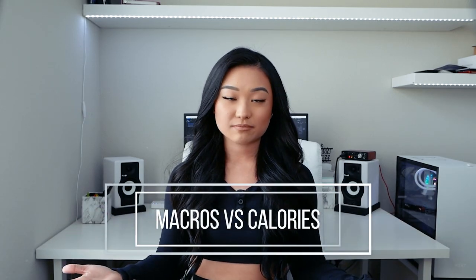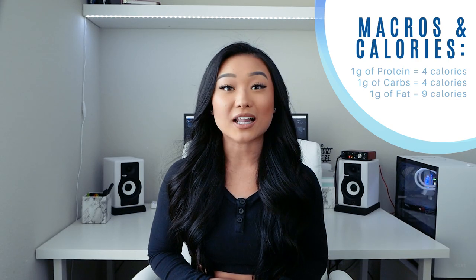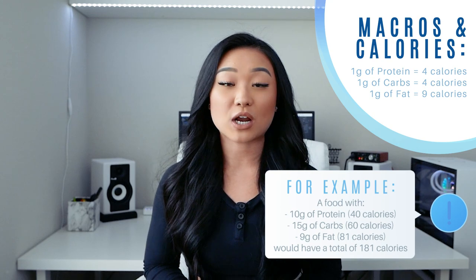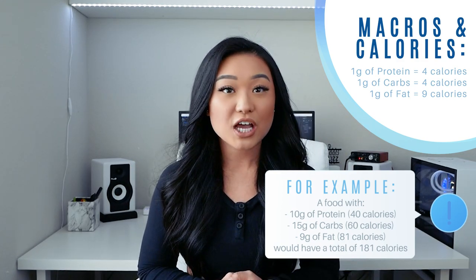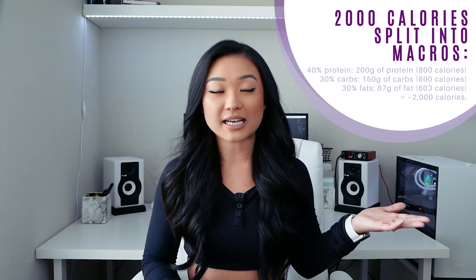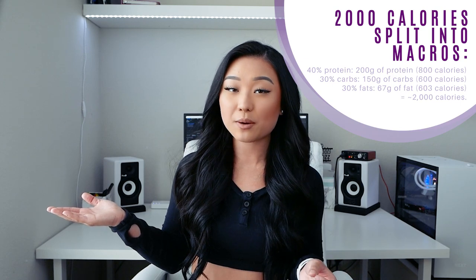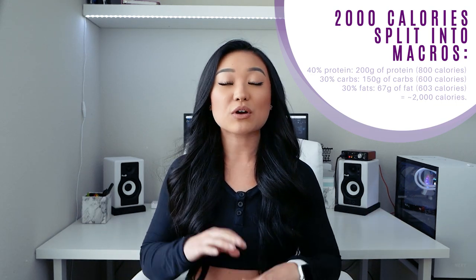So what do macros and calories have to do with each other? Every macronutrient holds a caloric value. One gram of protein has 4 calories, one gram of carbs has 4 calories, and one gram of fat has 9 calories. Therefore, if you're tracking your macros and hitting them consistently, that means you should also be hitting your caloric goals consistently. However, the opposite is not true — just because you're hitting your caloric goal doesn't mean you're getting all your targeted macros in, because your macros can be divided in a million different ways. For example, if your goal is 2,000 calories a day, you could do 40% protein (~200g, 800 cal), 30% carbs (~150g, 600 cal), and 30% fat (~67g, 603 cal) — all equaling roughly 2,000 calories.